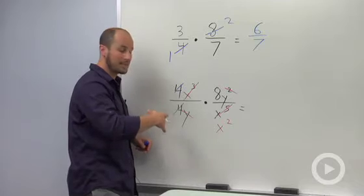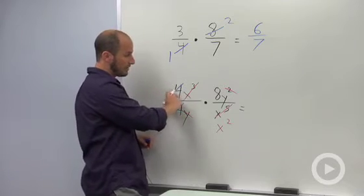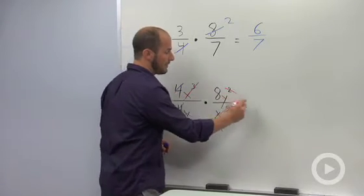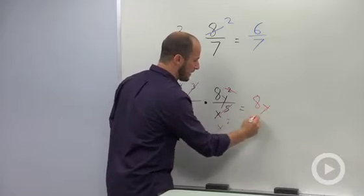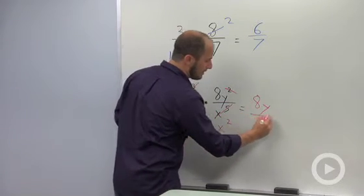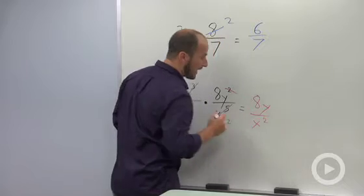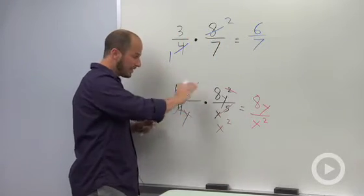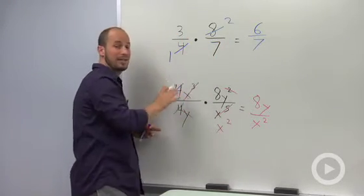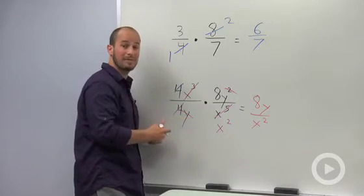Once we've simplified everything up, we can just multiply across. So our numerator now just has an 8y, and our denominator has just an x squared. So by canceling things just like we did when we're dealing with fractions, we're able to simplify this up fairly easily.